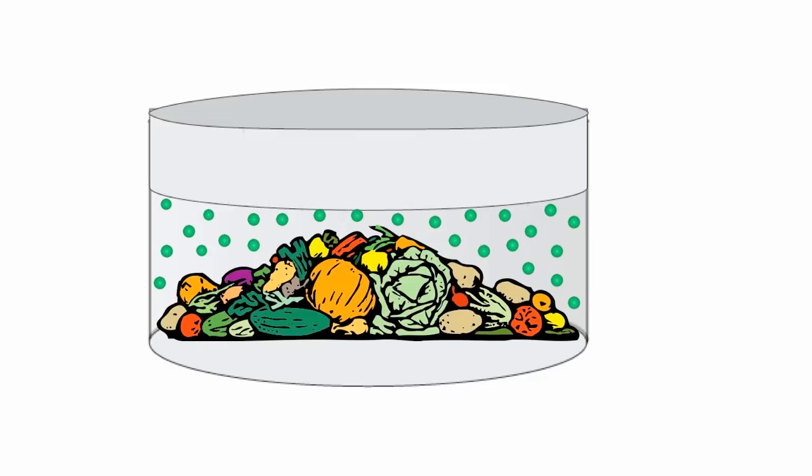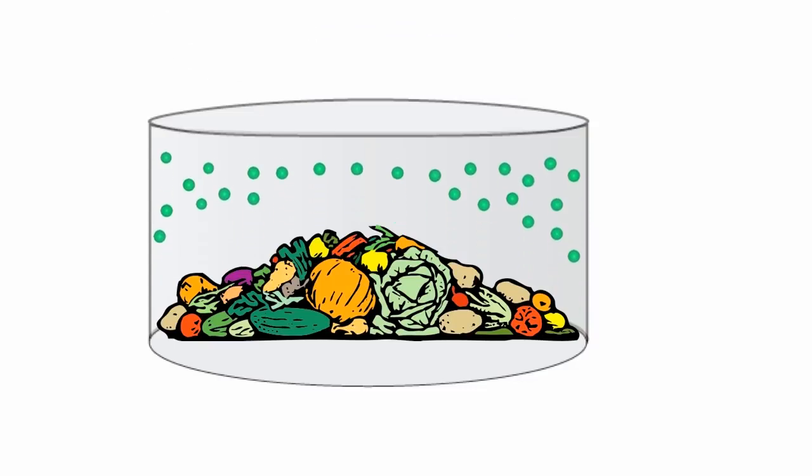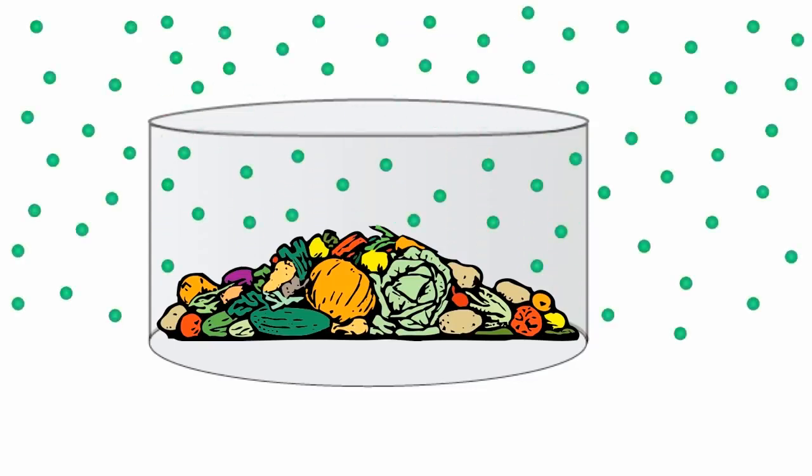However, take the lid off the box and those particles will no longer bounce off the lid and be contained. They will start to escape into the air around the box. You'll soon notice the effect and will be able to smell the rotting vegetables. And that's those gas particles reaching your nose by diffusion.